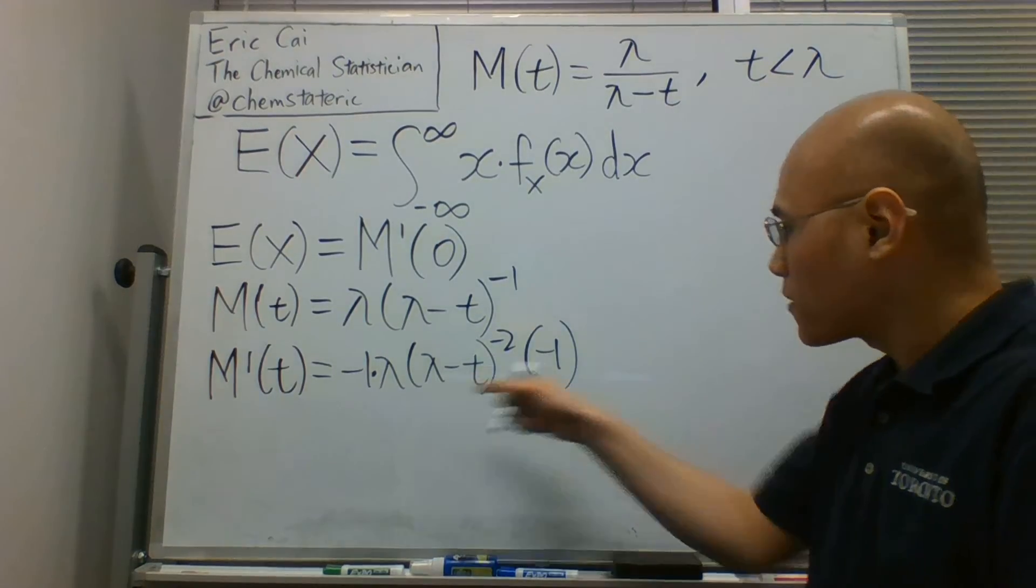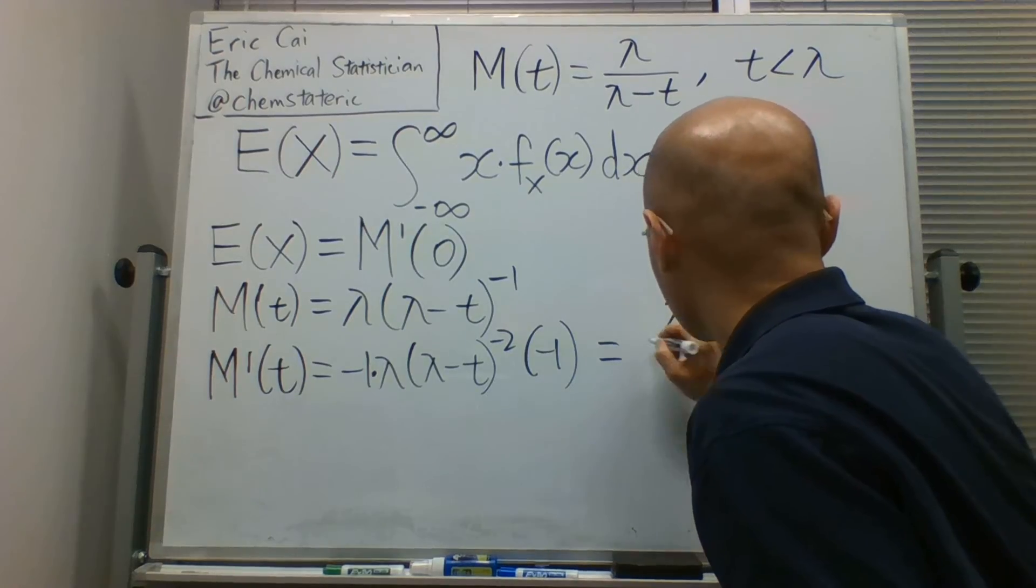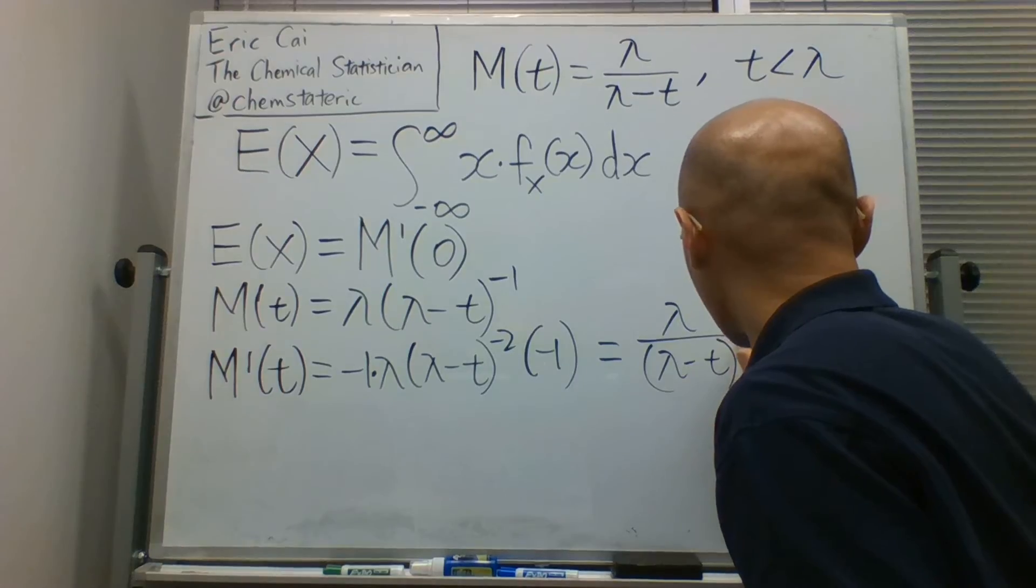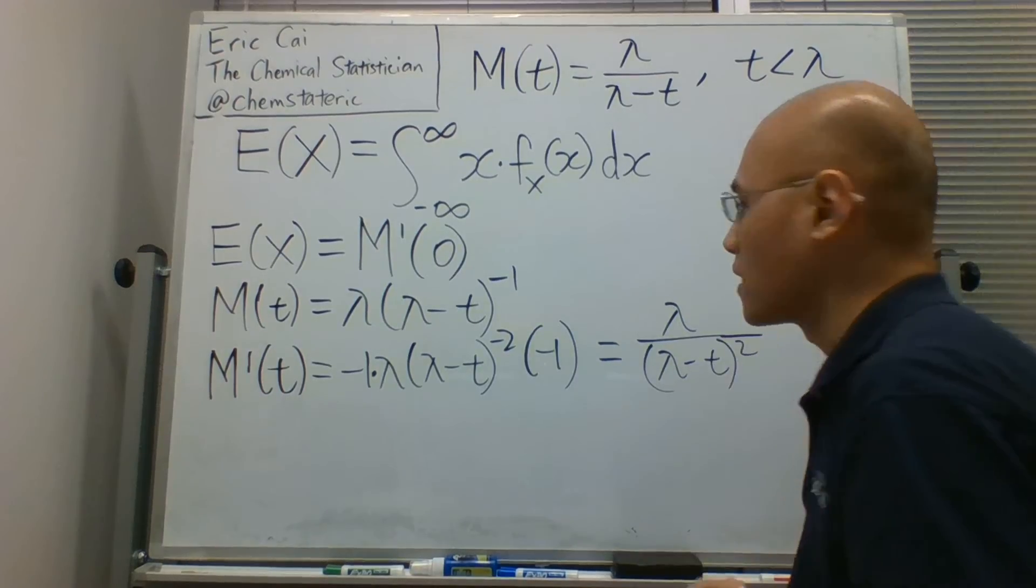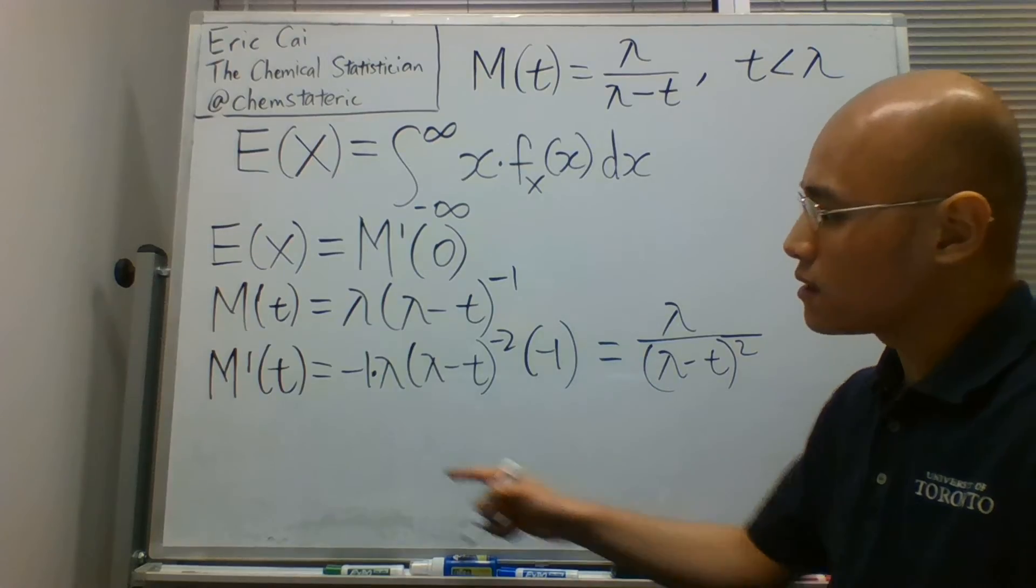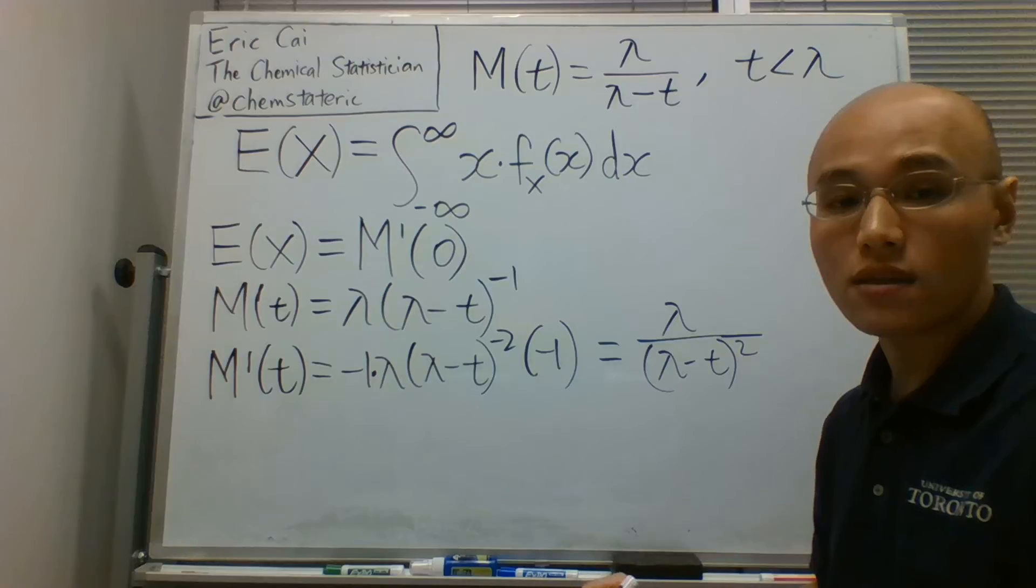Simplifying this expression, we get lambda divided by lambda minus t all squared. So to get the expected value, we simply evaluate this first derivative at t equals zero.